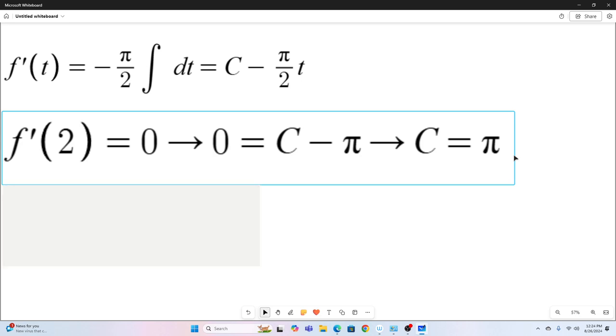All right, so now F prime of T is pi minus pi over two T. We just replaced that C with what we found it to be.